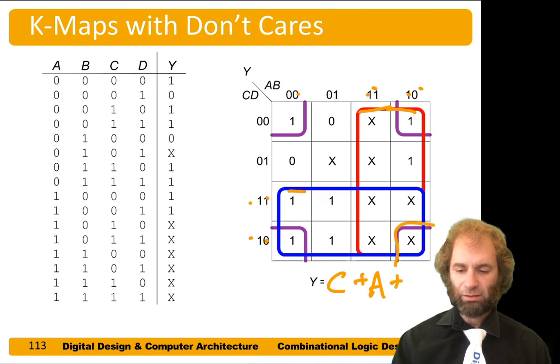Finally, the corner - we did this last time. A could be either zero or one, so it doesn't matter. B is always zero, so it's B bar. C is either zero or one, doesn't matter. And D was zero on both of them, so D bar.